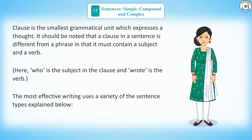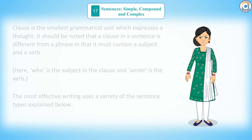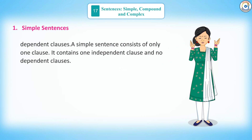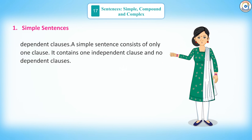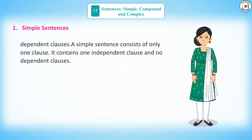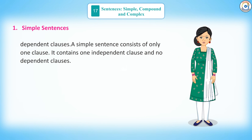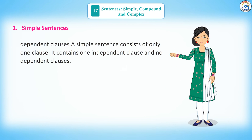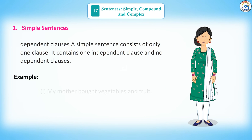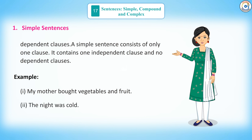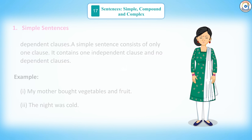The most effective writing uses a variety of the sentence types explained below. 1. Simple Sentences: A simple sentence consists of only one clause. It contains one independent clause and no dependent clauses. Example: 'My mother bought vegetables and fruit.' 'The night was cold.'